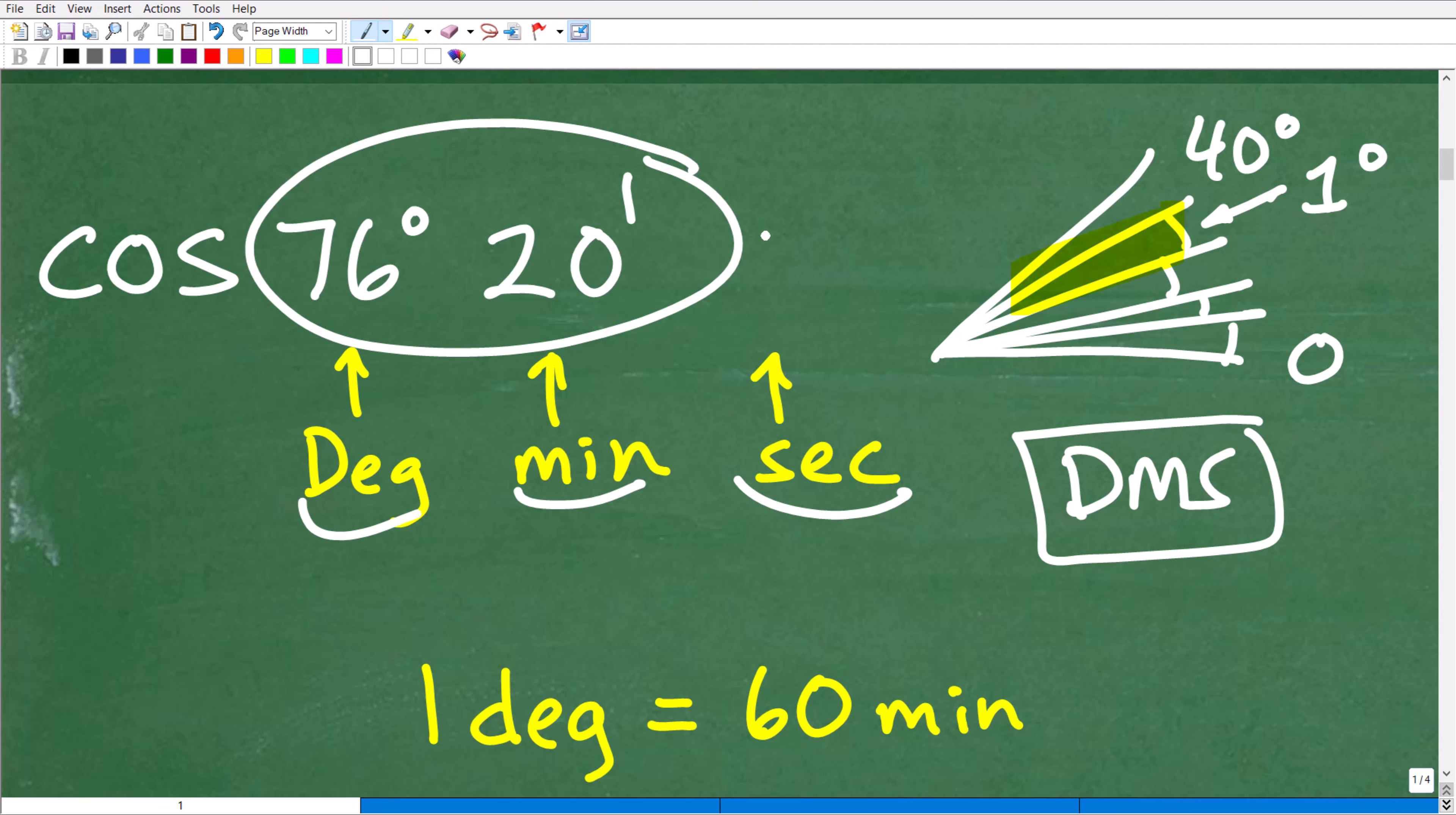But really, what you want to do is convert your angle here from degrees and minutes. And if you had seconds, you want to convert this angle all into a degree. So this part is already a degree. So what we want to do is convert this 20 minutes into a decimal, a part of a degree.